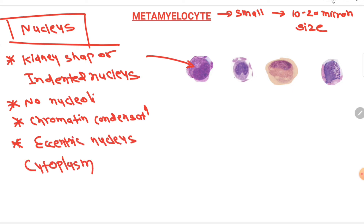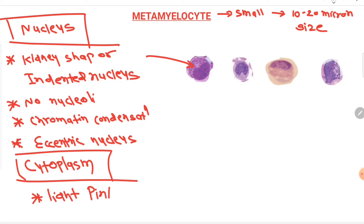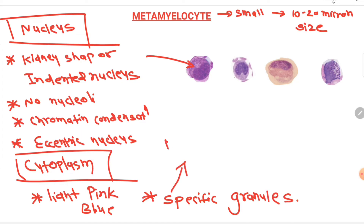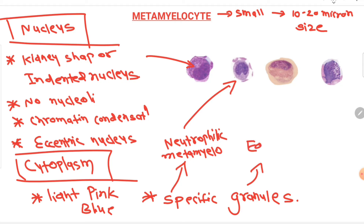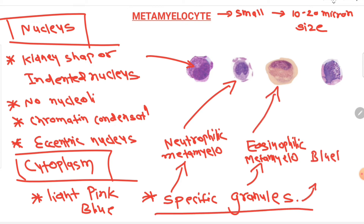The cytoplasm is light pink-blue, and like the myelocyte, specific granules are present that determine the fate of the metamyelocyte. Pink-blue granules indicate a neutrophilic metamyelocyte forming a neutrophil; red-orange granules indicate an eosinophilic metamyelocyte forming an eosinophil; and blue-black granules indicate a basophilic metamyelocyte that will become a basophil.